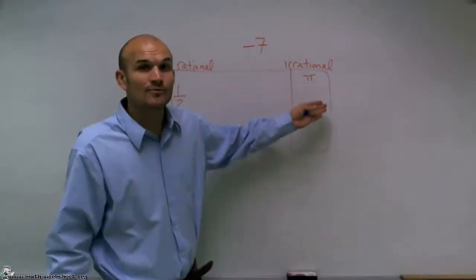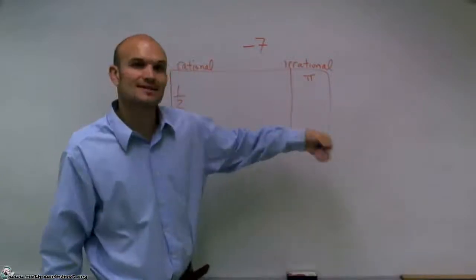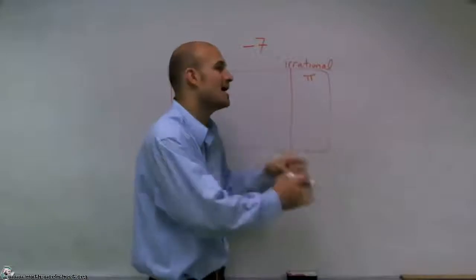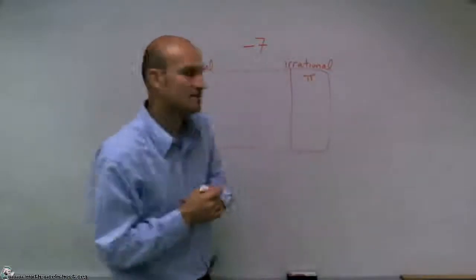But pi, we know, is the number 3.14159... goes on and on forever. So we can't actually write down the exact value of pi. We have to represent it with a symbol.